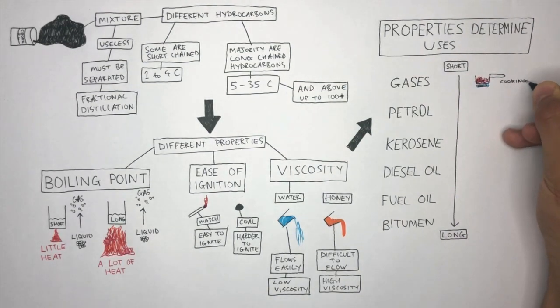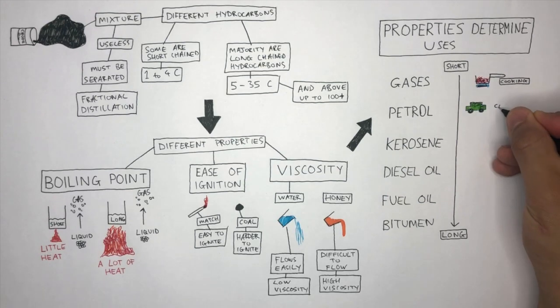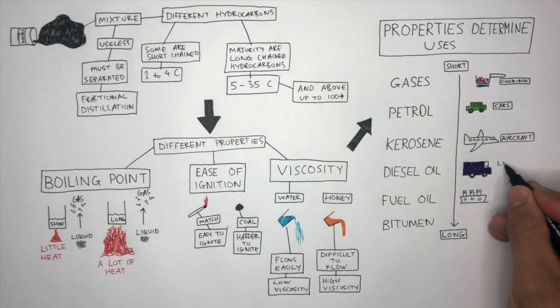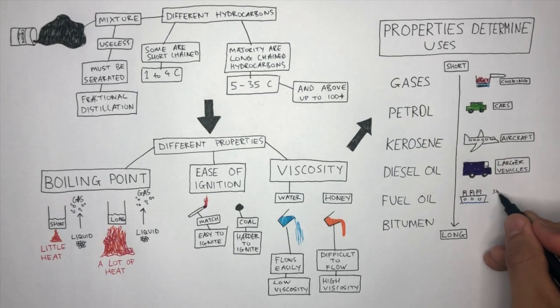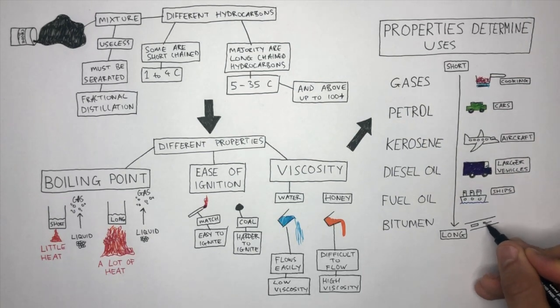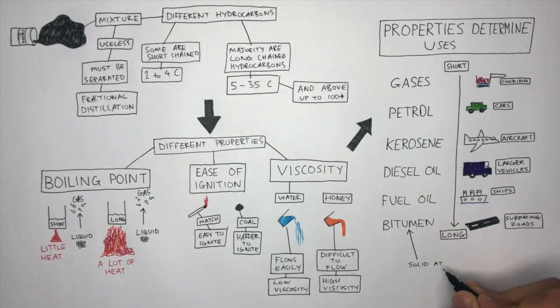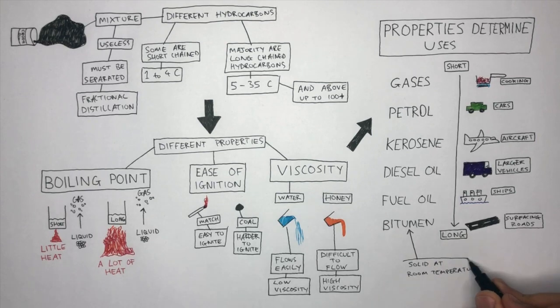Gases are used for cooking. Petrol is used for driving cars. Kerosene is used for aircraft. Diesel oil is used for large vehicles. Fuel oil is used for ships. And bitumen is used for surfacing roads. Bitumen is solid at room temperature and waterproof, making it really useful for surfacing roads.